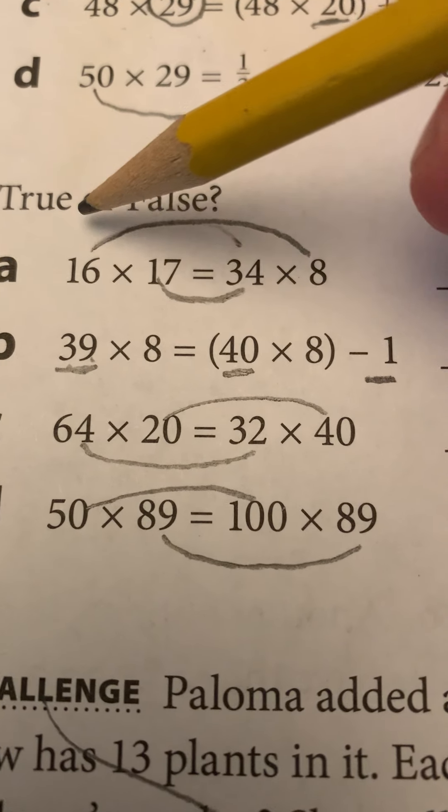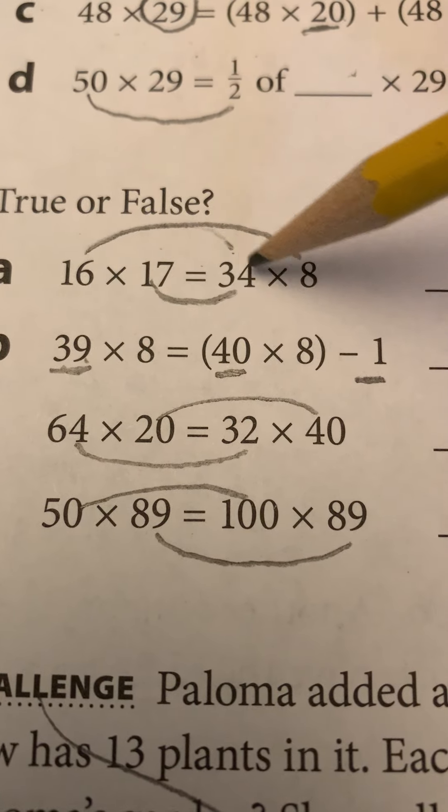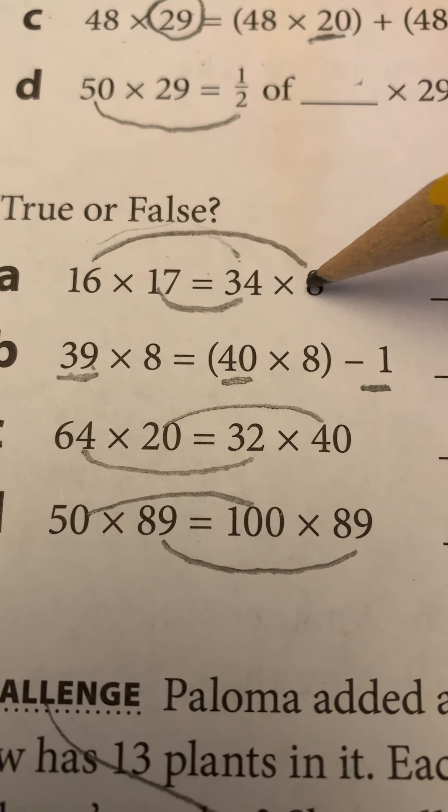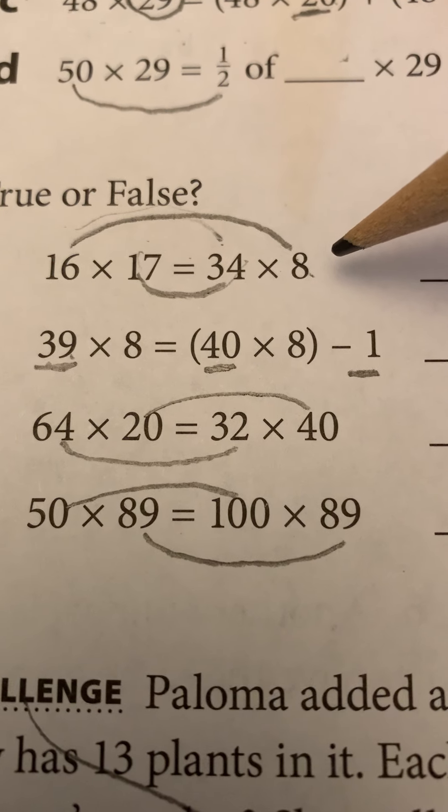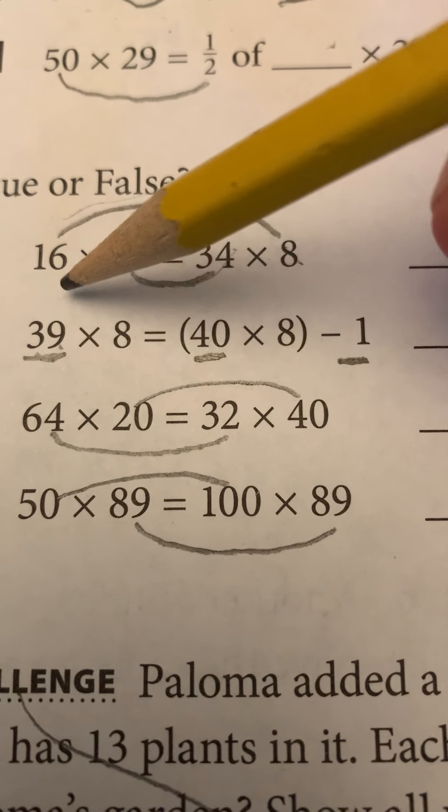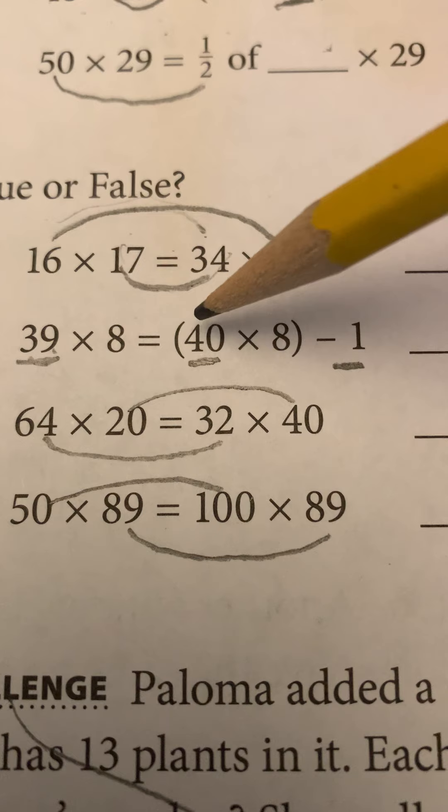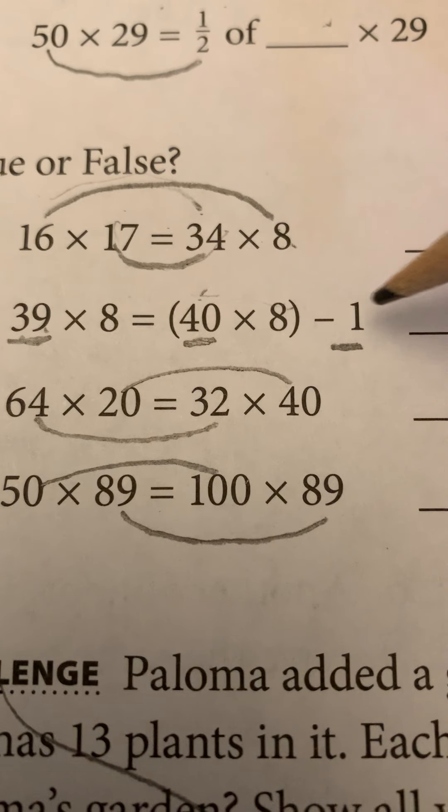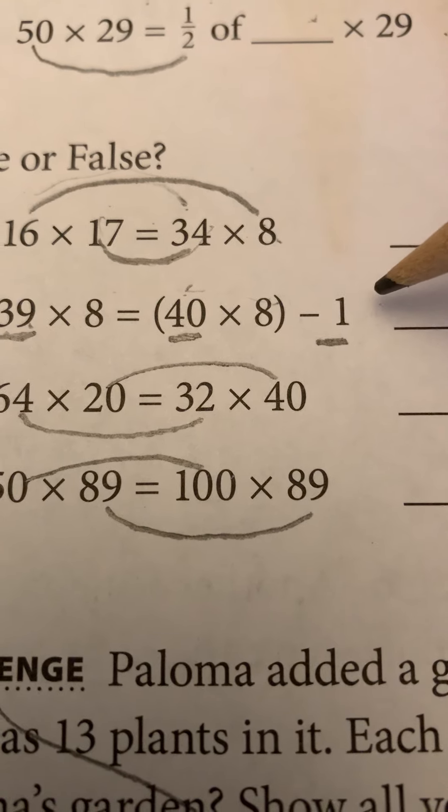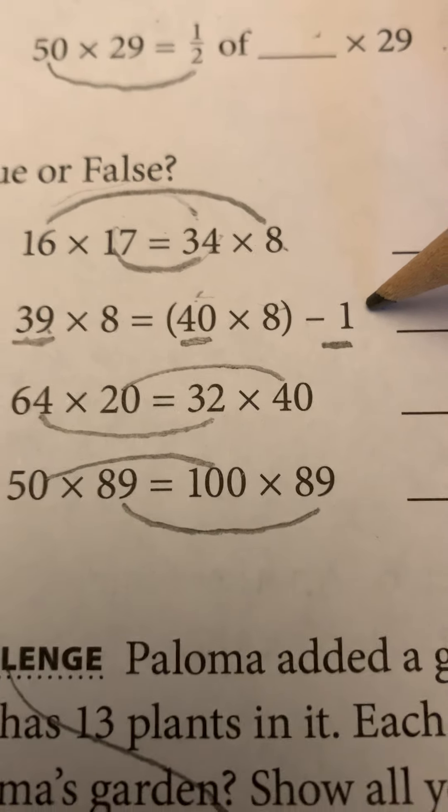True or false? 16 times 17 equals 34 times 8. Well, if I halved one and I doubled the other, are they equal? 39 times 8, 40 times 8, 40 sets. Now I have to subtract one set. Am I subtracting one or one set? True or false?